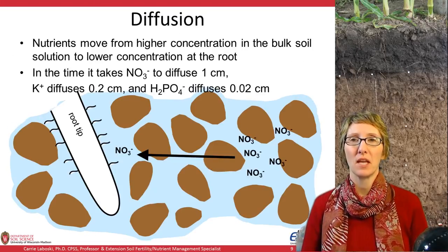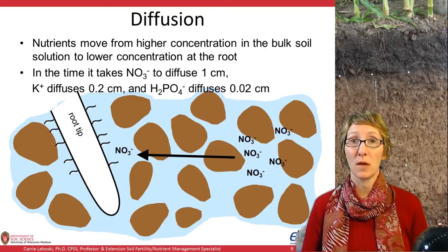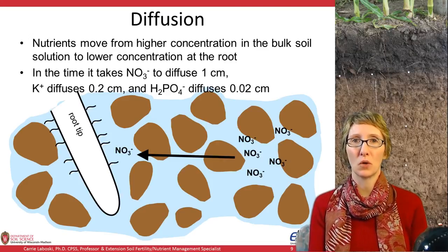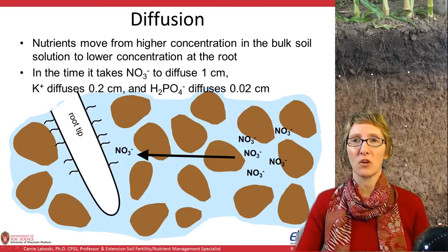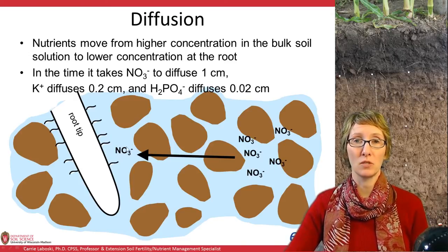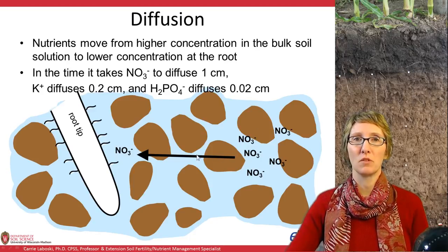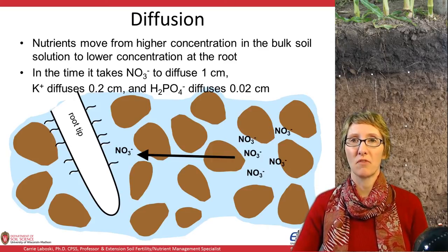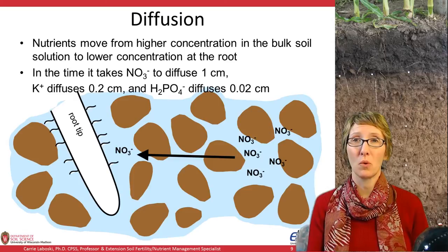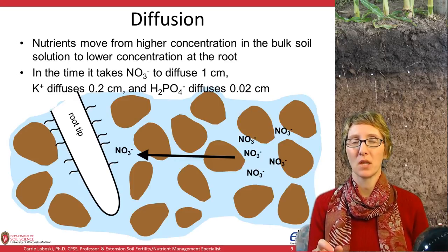Diffusion is another method — a term you may remember from high school chemistry. It's simply the movement of nutrients from higher concentration to lower concentration. Here's an example with nitrate: there's a high concentration of nitrate in the bulk soil solution and a low concentration by the root tip because the plant is using it, so it diffuses across. Diffusion is not as fast a process — in the time it takes nitrate to diffuse one centimeter, potassium will diffuse 0.2 centimeters, and phosphate will diffuse 0.02 centimeters. So nitrate diffuses much faster than potassium or phosphate.